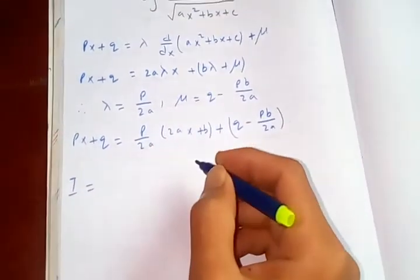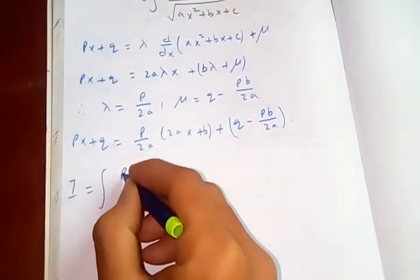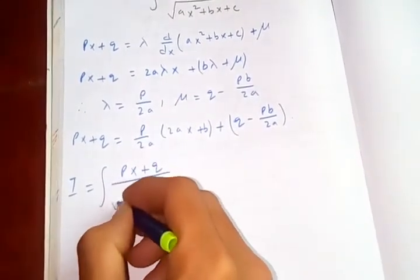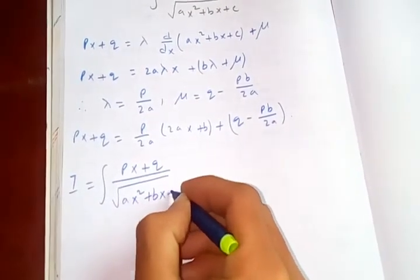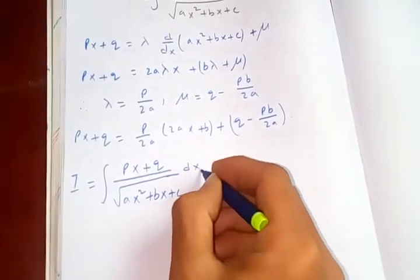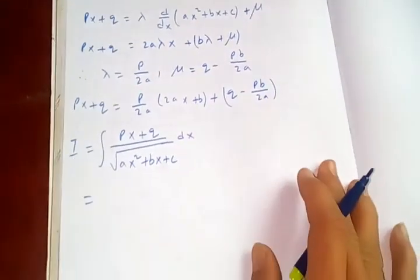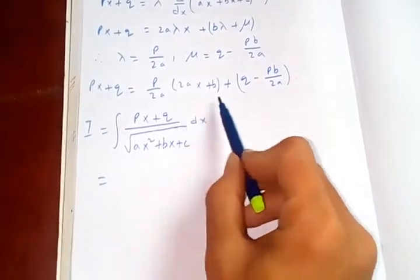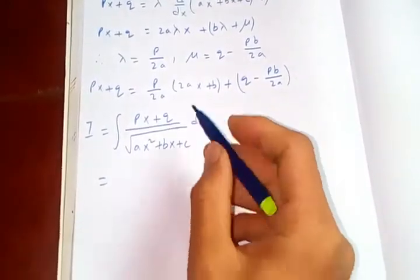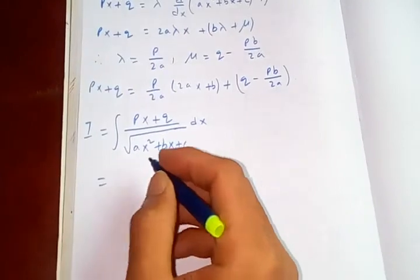Let me write the integral to be I: integral of px plus q upon square root of ax square plus bx plus c dx is equal to what? Plug in. In place of px plus q, then you can keep this one.